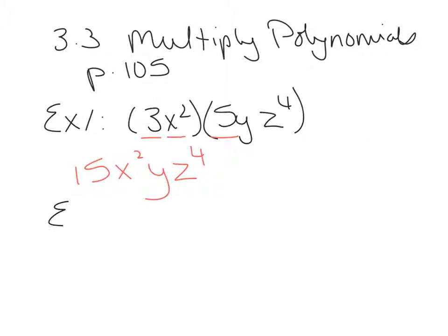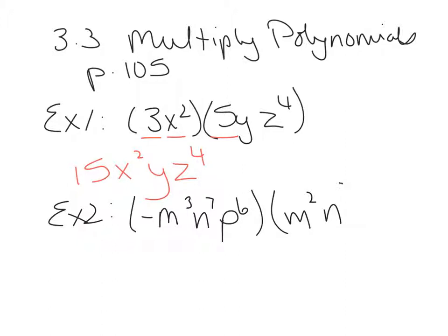Example 2 is negative m cubed n7p6, another monomial, times m squared n cubed p — another monomial. So monomial times a monomial again. You start with multiplying the coefficients. The coefficient here is negative 1, because there's an invisible 1 here. The coefficient here is 1. So negative 1 times 1 is negative 1. When we multiply variables, we add exponents. So we're going to multiply the m's together by adding their exponents, which makes m to the 5th.